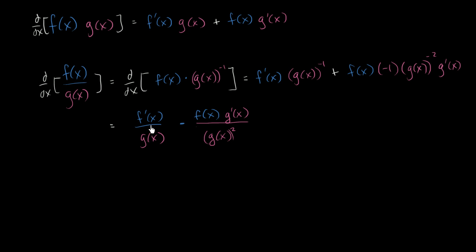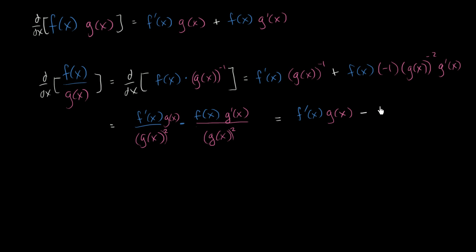To get the standard form, we just have to add these two fractions. We multiply the numerator and denominator of the first term by g of x so that both terms have g of x squared in the denominator. So we get g of x in the numerator of the first term and g of x squared in the denominator. Now we're ready to add: the derivative of f of x over g of x equals f prime of x times g of x, minus f of x times g prime of x, all over g of x squared.